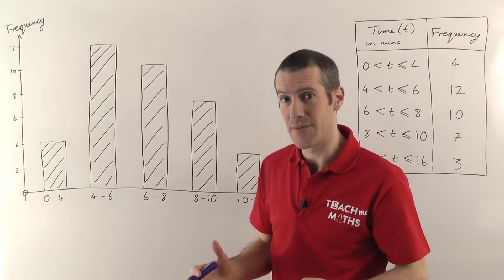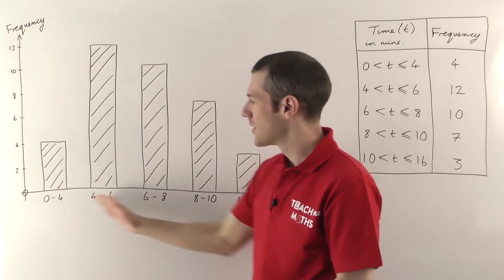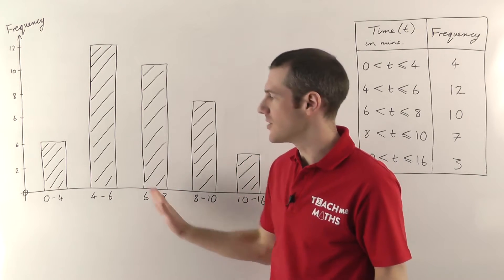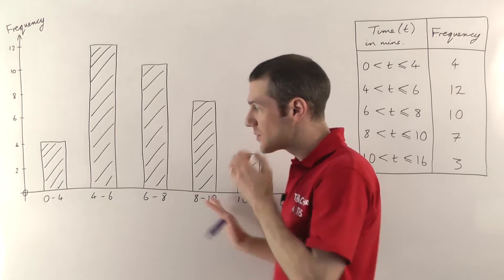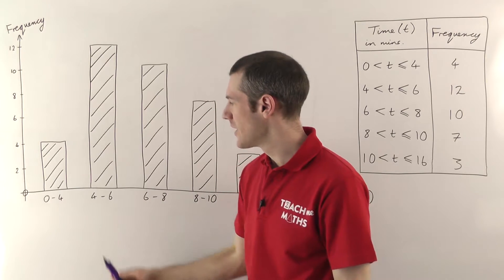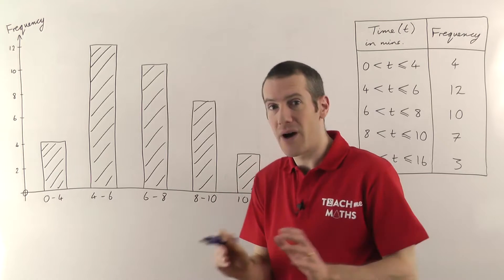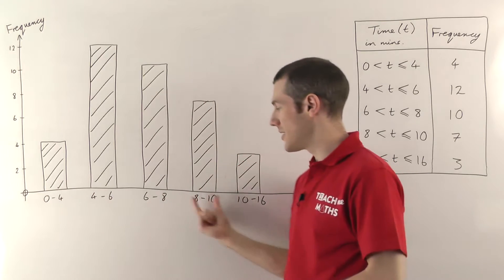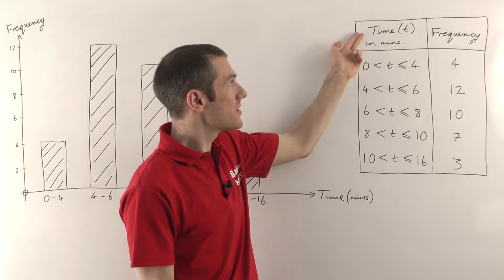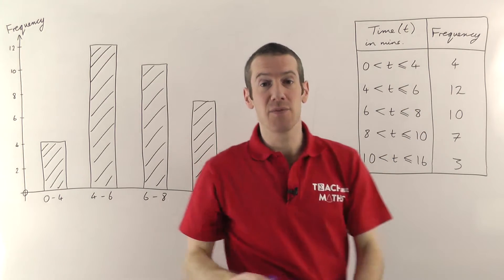Bar charts are really best for discrete data, because for discrete data the spaces between the bars don't have any meaning. If we were doing colours of cars — blue, black, green, yellow — the spaces wouldn't mean anything between the different colours; you just have a list of possible options. But for continuous data like this, if one bar goes up to 4 and the next carries on from 4, it's a bit strange having a gap there. You really want a scale along the bottom so you can read off values, and the points between the bars would have some meaning. But on a bar chart you just can't do that — you have to label the bars, and the spaces between them have no meaning. With continuous data like time, going smoothly from 0 through to 4 and then 4 through to 6, you're much better off with a histogram.